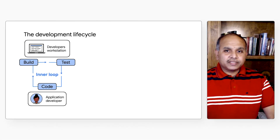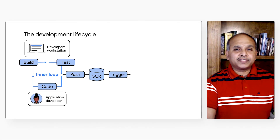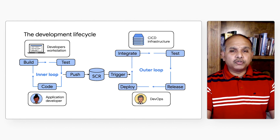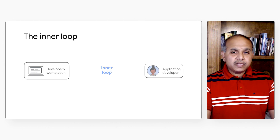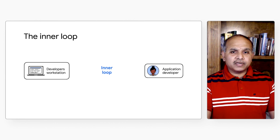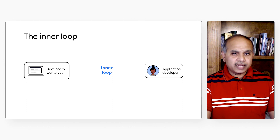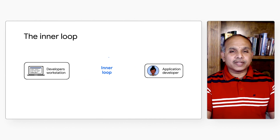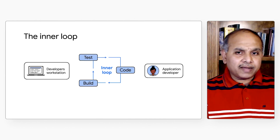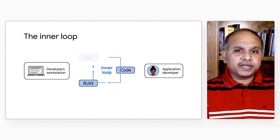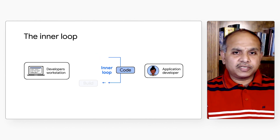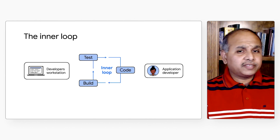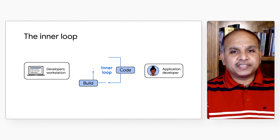To set the context, the development life cycle can often be divided into two parts: an inner loop and an outer loop. The inner loop includes the work an application developer does on their own workstation, including coding, building, and testing locally. This loop repeats many times until a developer is ready to push their code to a source control repository. This is a typical day in the life of an application developer.